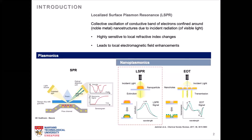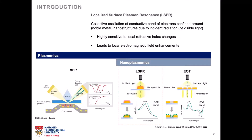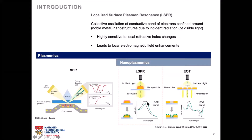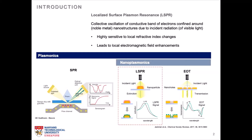The molecular binding event is typically detected as a shift in the peak of the extinction or absorbance spectra when light is either passed through or transmitted across the nanostructure, or even reflected off the nanostructures.